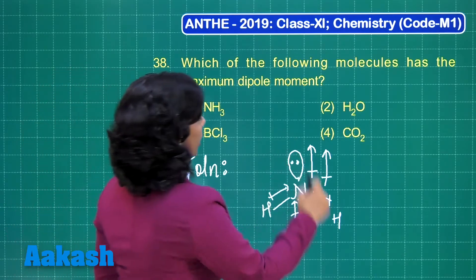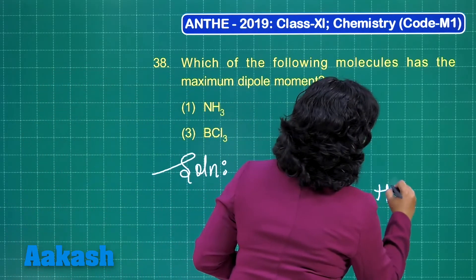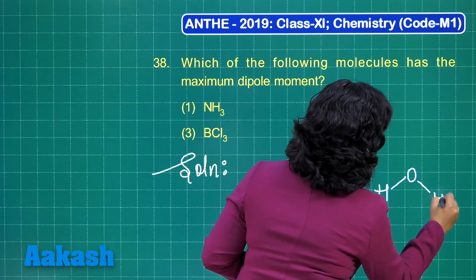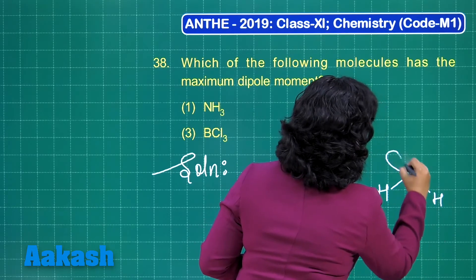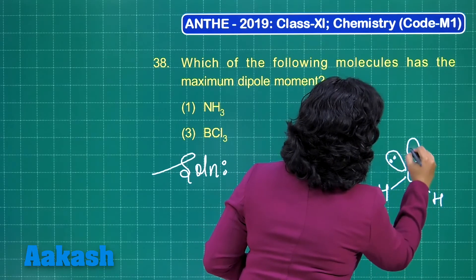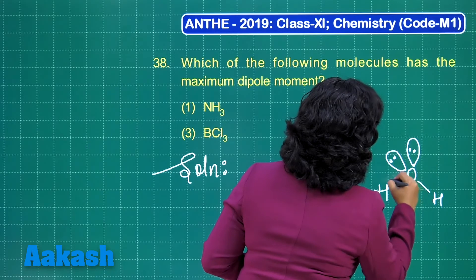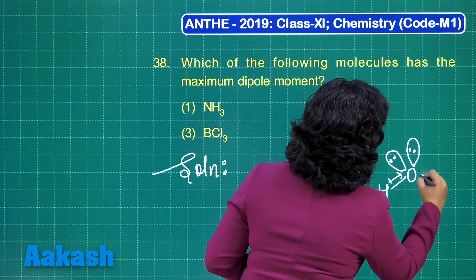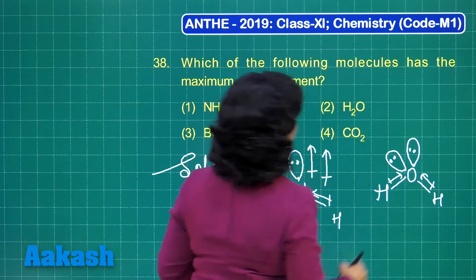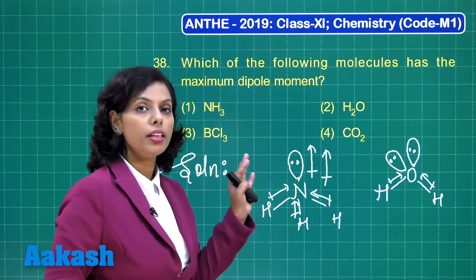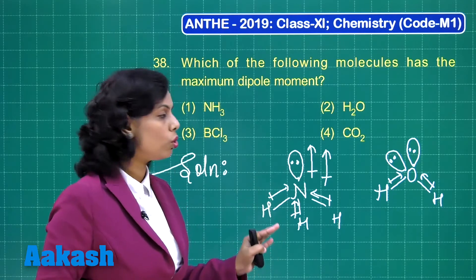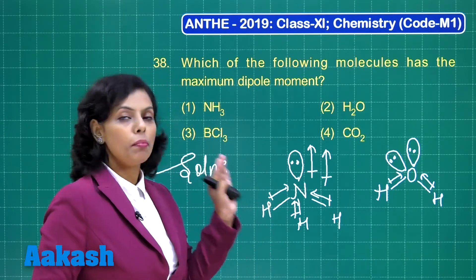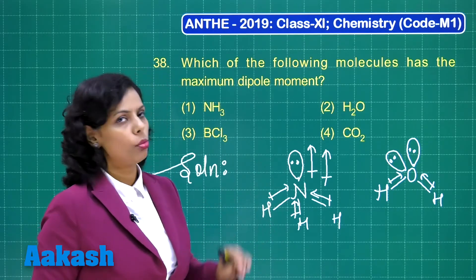If I talk about H₂O, the oxygen atom has two lone pairs. Due to the electronegativity difference between hydrogen and oxygen, there is bond dipole also, and this gives polarity to the molecule.